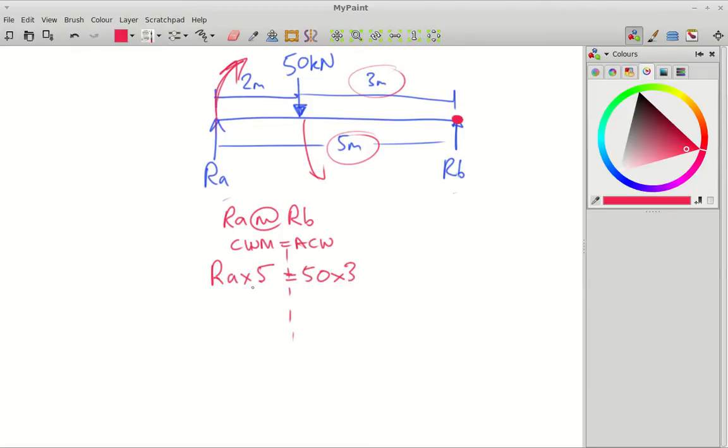So we can say then, summarizing, RA times 5, a neater way of writing that is 5RA, equals 50 times 3, which is, of course, 150. So 5 times RA is 150. We don't want to know 5 times RA, we want to know 1RA. So RA equals 150. We'll take times 5 across, becomes divided by 5. Therefore, RA equals 150 divided by 5 is 30 kilonewtons.